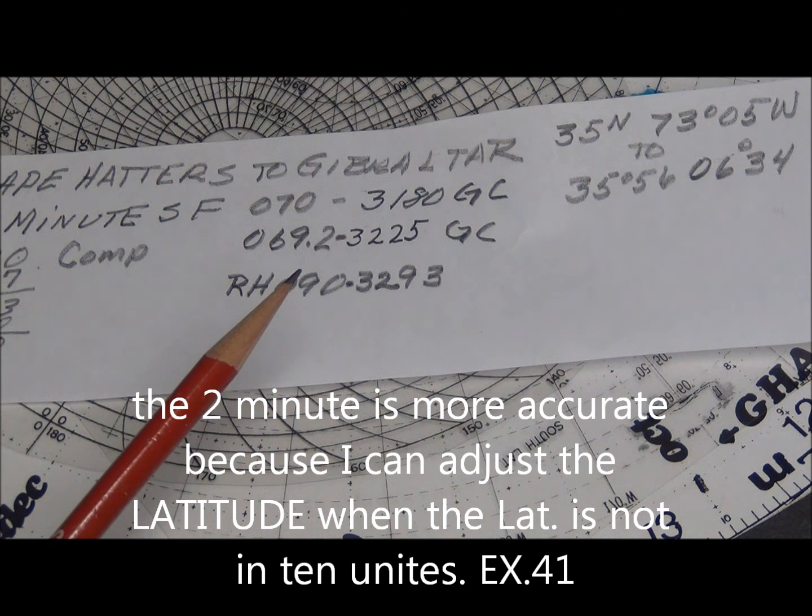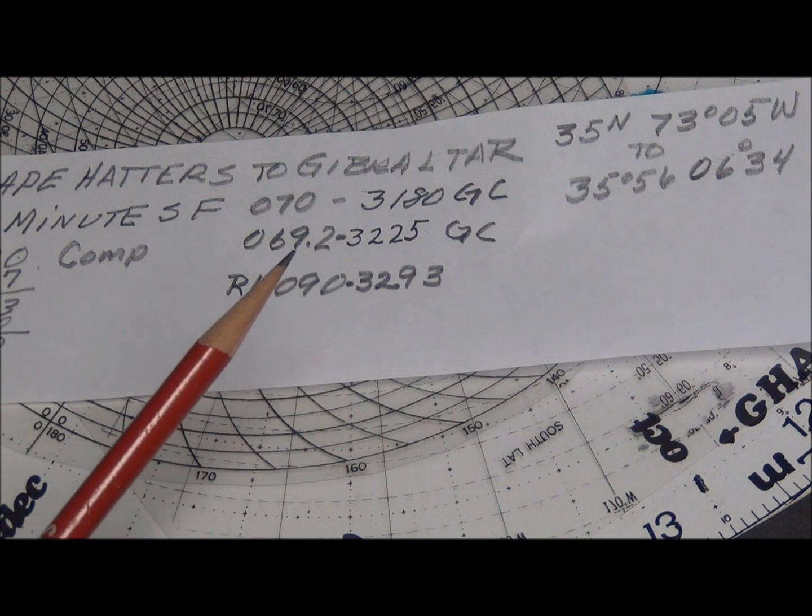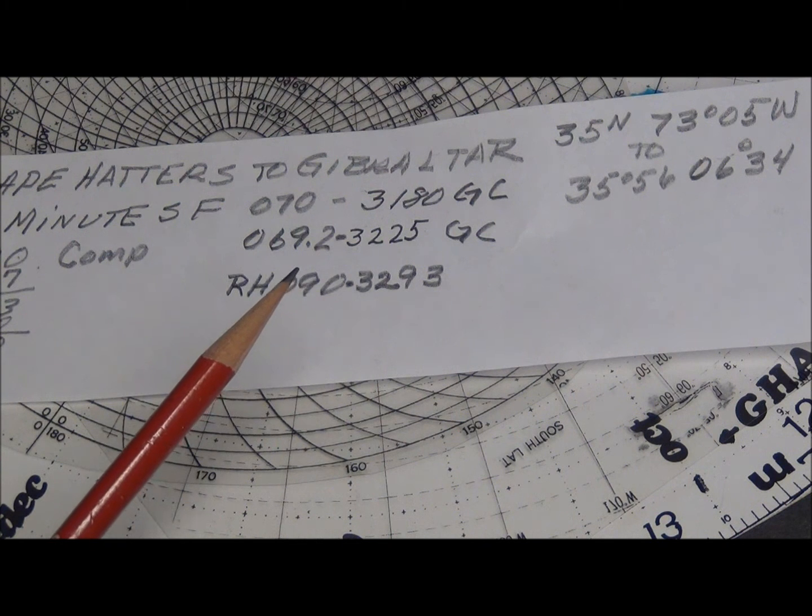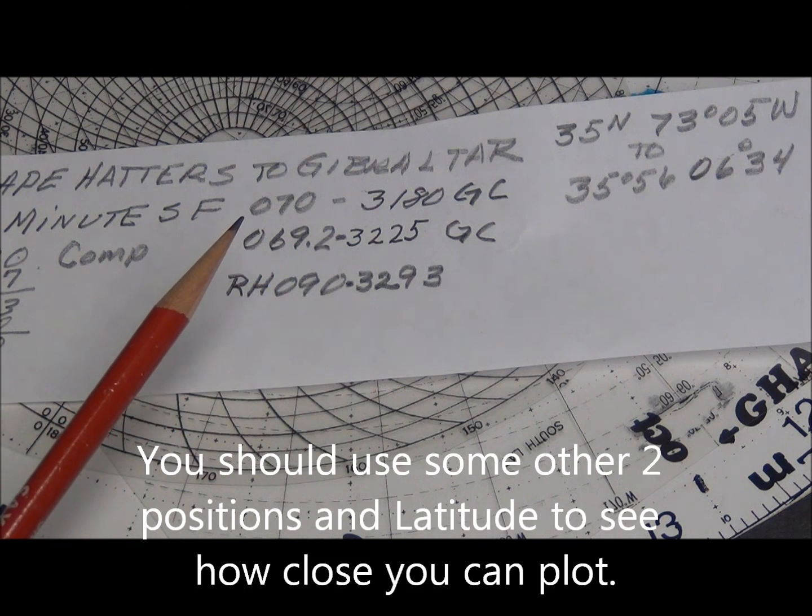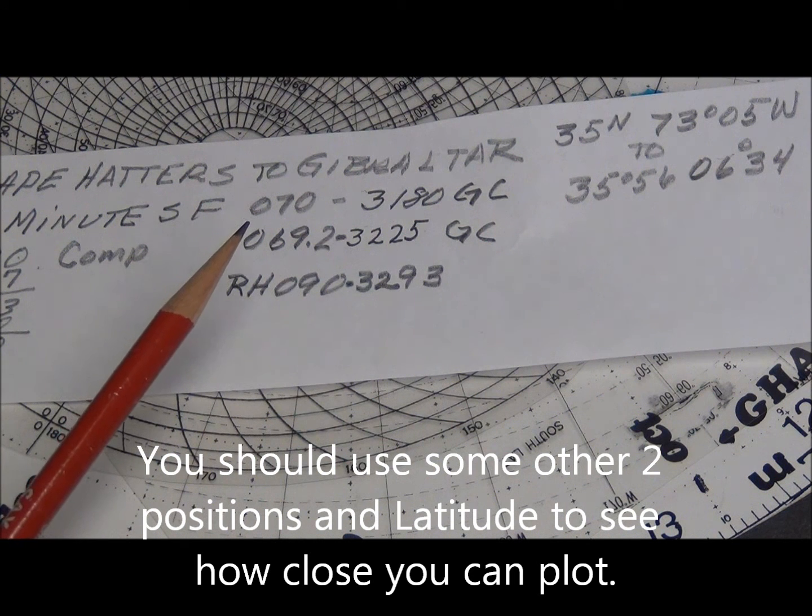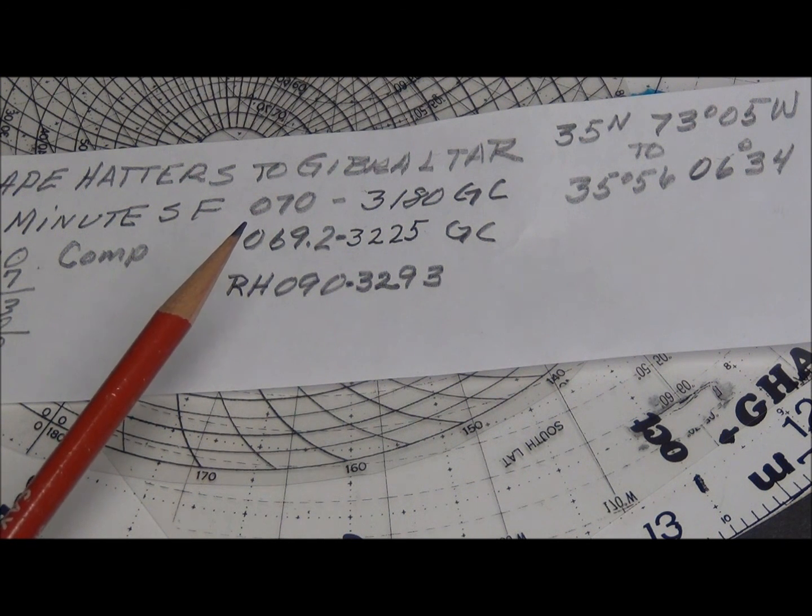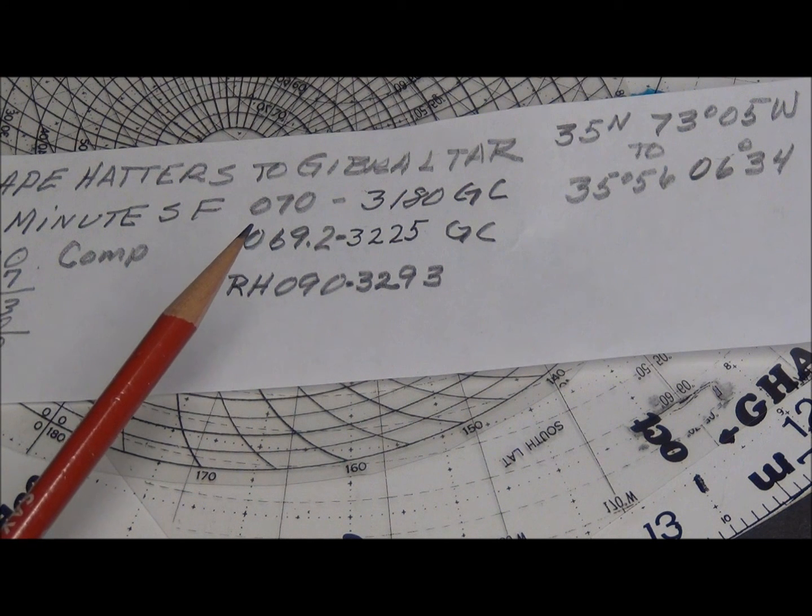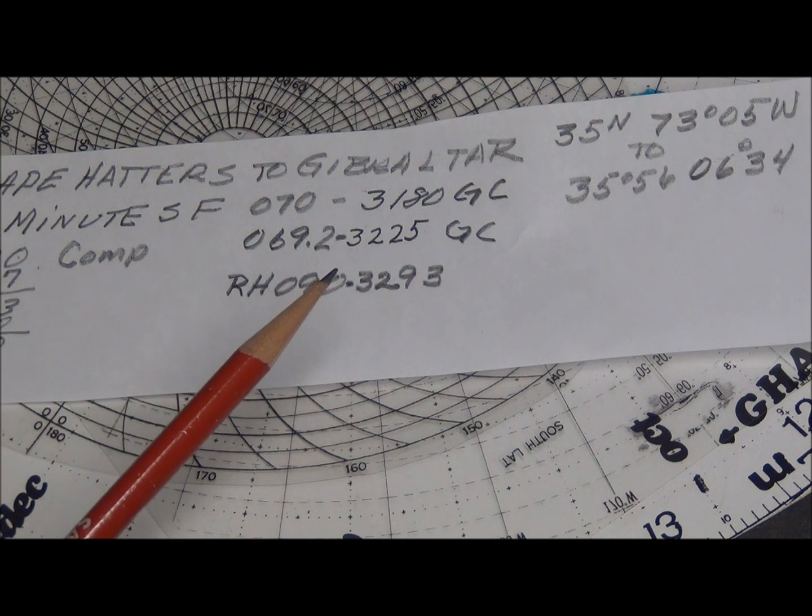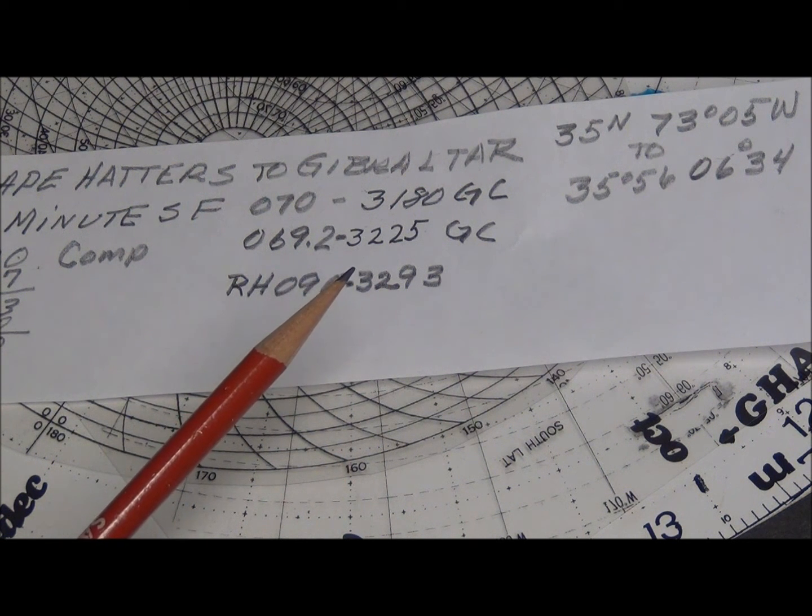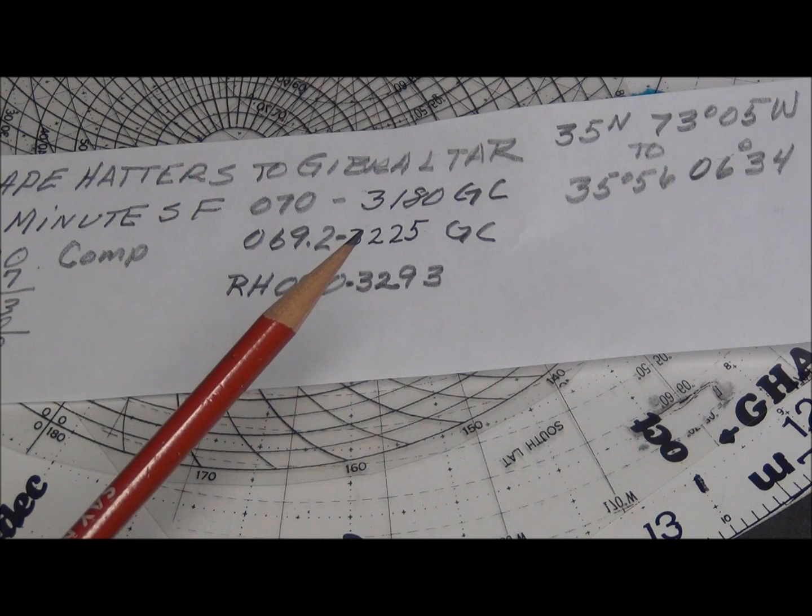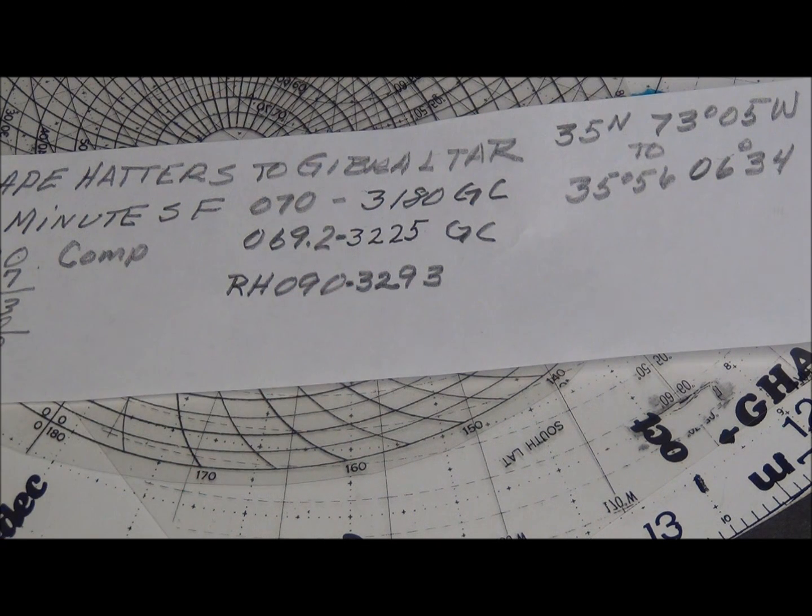You would be surprised if you used a Root Starfinder or a Two-Minute to do this. My answer from the Two-Minute Starfinder was not 069.2, but 070. I can't read that close. And instead of a distance of 3,225 Great Circle, I got 3,180. But let me explain to you how I did this.